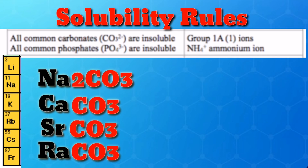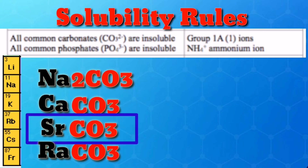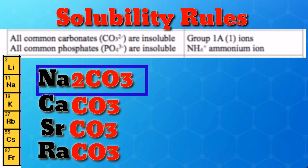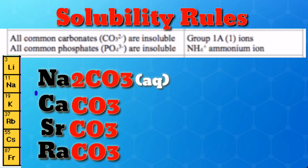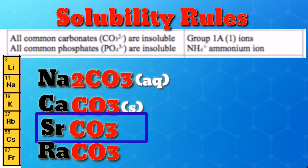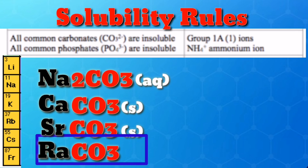Rule 10: Carbonates are frequently insoluble. Exceptions are elements in Group 1A and the ammonium ion. Examples: sodium carbonate is soluble because sodium is in Group 1A. Calcium carbonate is insoluble because calcium is not in Group 1A. Strontium carbonate is also insoluble — strontium is not in Group 1A. Radium carbonate is likewise insoluble, same as calcium and strontium.